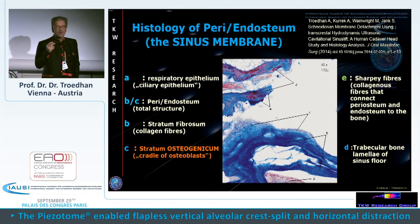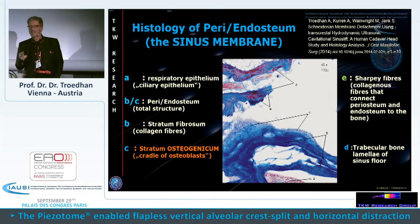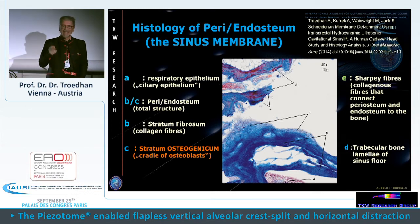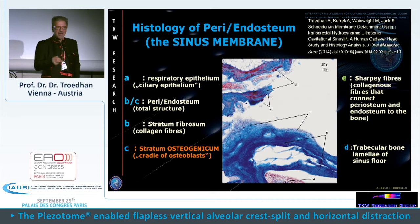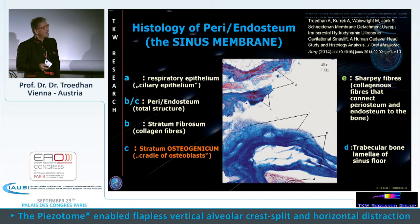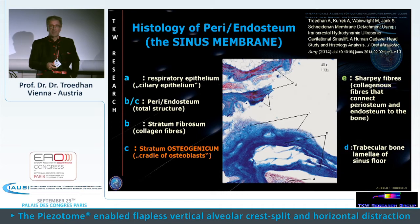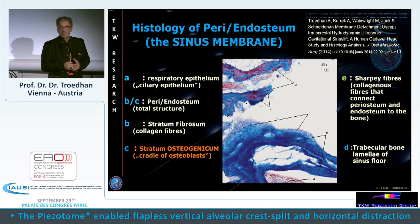No bone graft material is ever able to create bone — not even autologous bone — because after three hours, autologous bone contains no vital cells. This has been known since 1960 and was investigated by Professor Bohr, a famous orthopedic surgeon. You can see the entity of bone and periosteum, and in this case the ciliary epithelium, together with the Sharpey fibers.